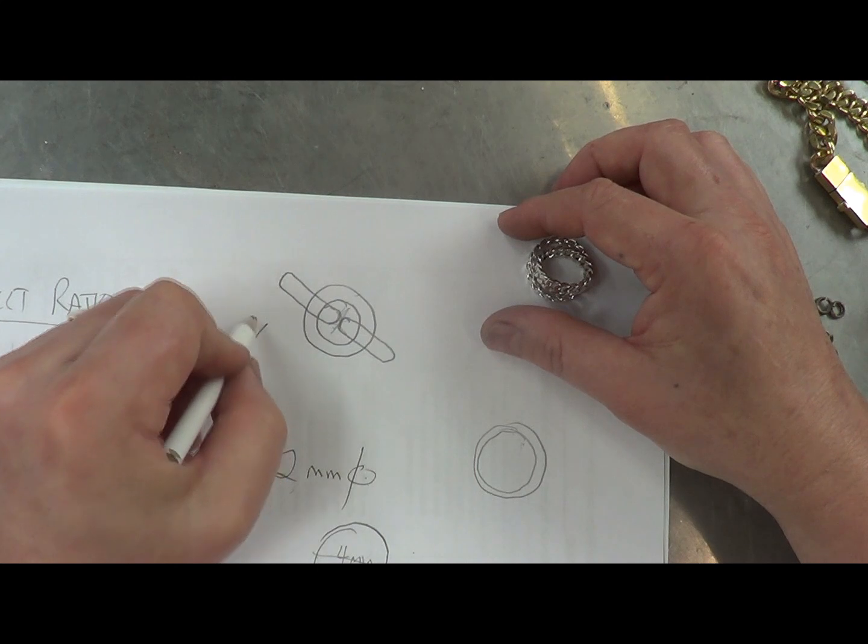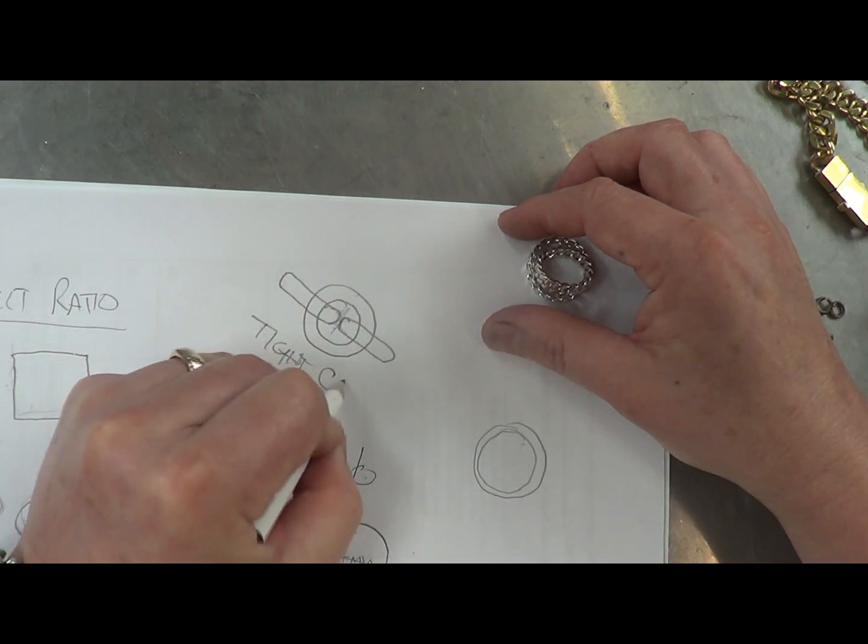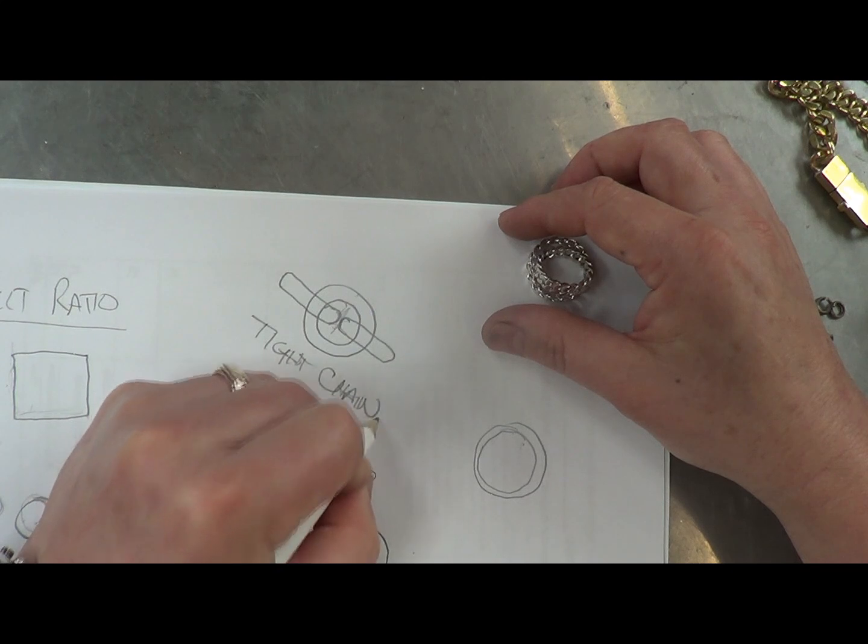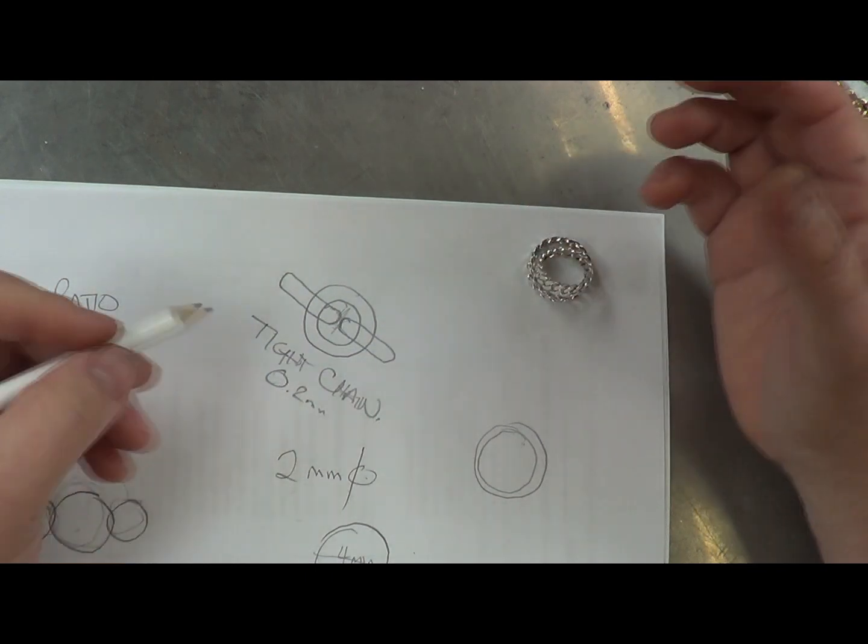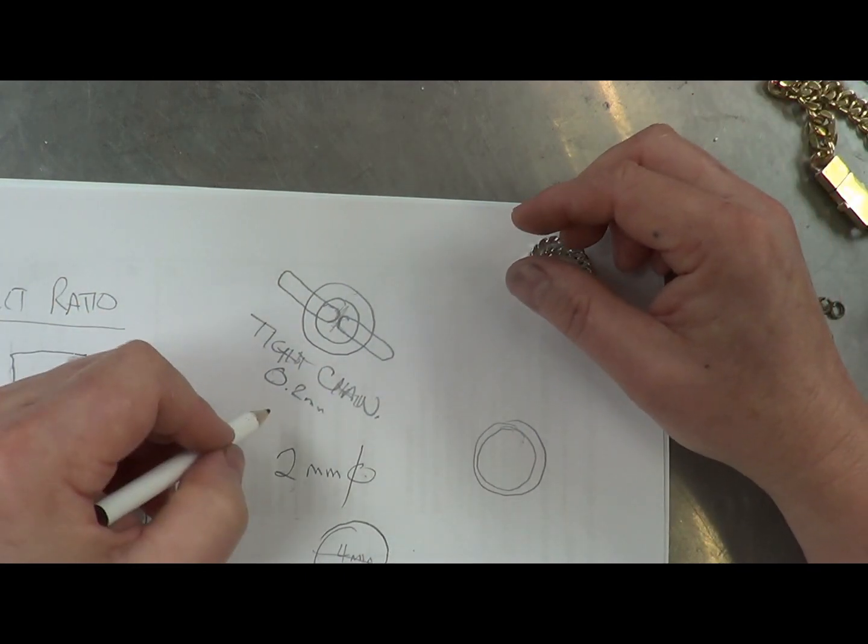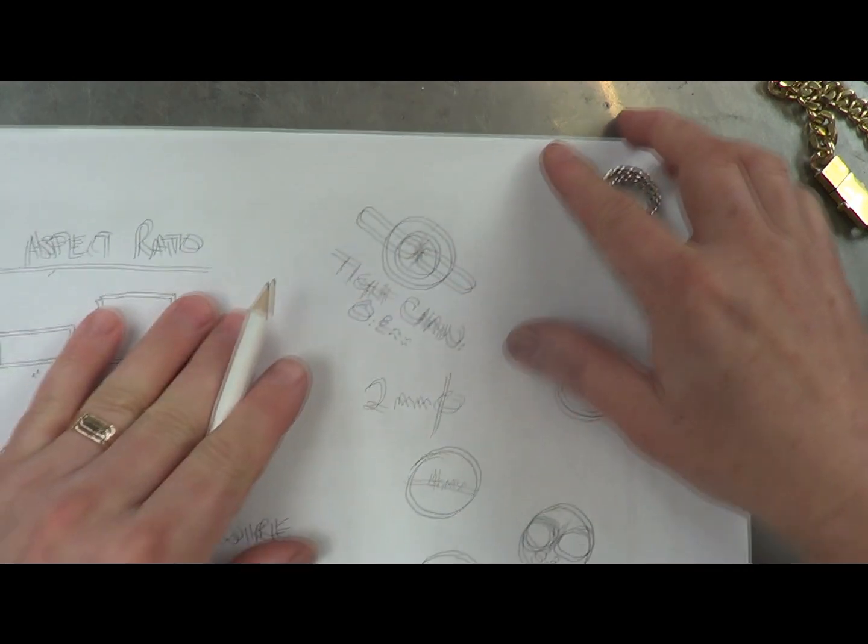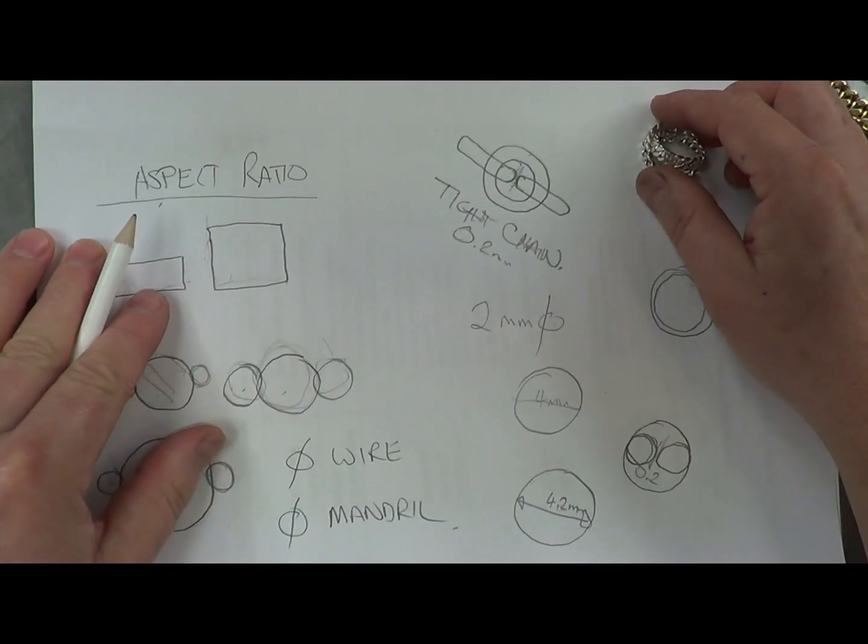So for a tight chain, I'm going to give myself 0.2 millimetres of gap. For a loose one, I might give myself a 1 mill gap or something like that. So that's the difference between a tight chain and a loose chain.